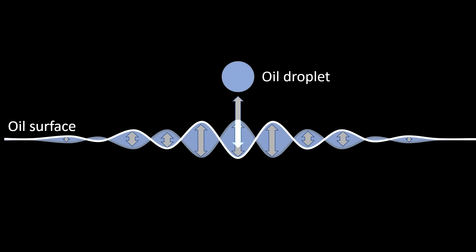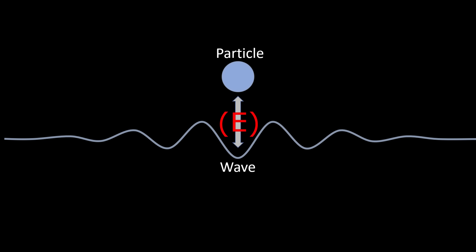So, droplet and surface are constantly transferring energy back and forth to each other, in a system that behaves both as a particle and a wave. And I think this is a beautiful example of particle-wave duality in the classical domain.